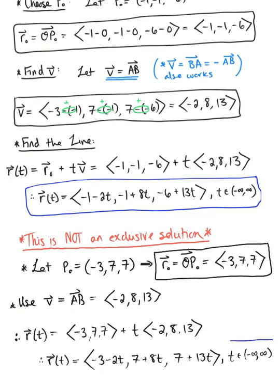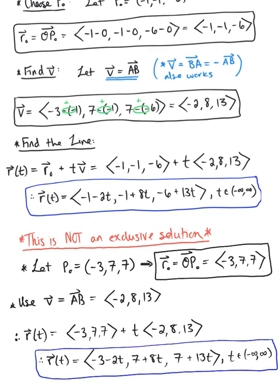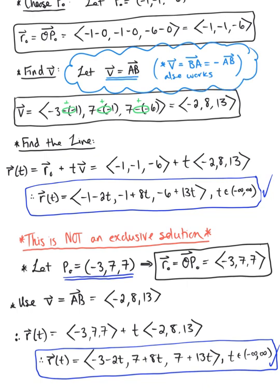Both of these answers are beautiful — this is a correct answer, and this is another correct answer. Many more exist. Your solution is going to depend on what point you choose to start with — what you let p-naught be — and also on how you define your vector v. Any scalar multiple of the vector is going to work.